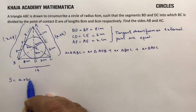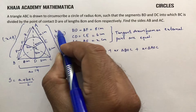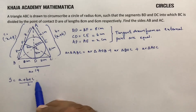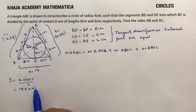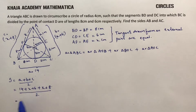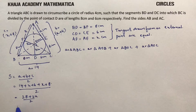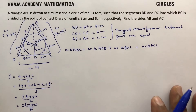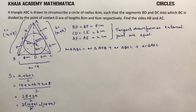S is the semi-perimeter: (a plus b plus c) by 2. So S equals (14 plus X plus 6 plus X plus 8) by 2, which is (28 plus 2X) by 2. Taking 2 common and cancelling, S equals 14 plus X.